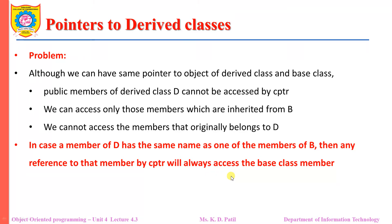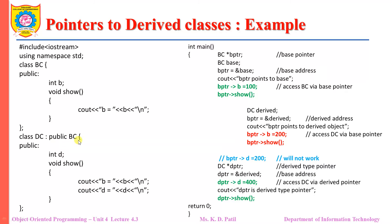Now let us consider we have a function display in class B as well as a function display in class D. Class B and class D will have the same function name with the same prototype. Now if you want to invoke the display function using the CPTR pointer which is created from base class B, it will always access the base class display function and will not access the derived class display function.